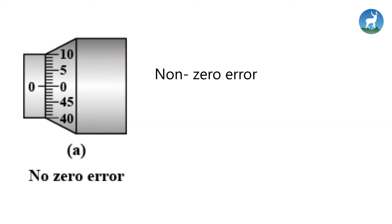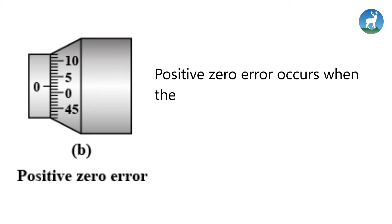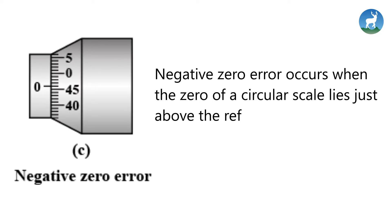Non-zero error is when the 0 of circular scale coincides with 0 of main scale. Positive zero error is when the 0 of circular scale lies just below the reference line. Negative zero error is when the 0 of circular scale lies just above the reference line.